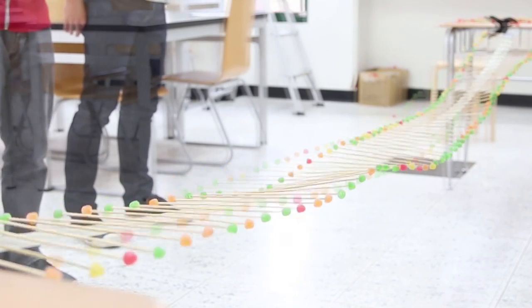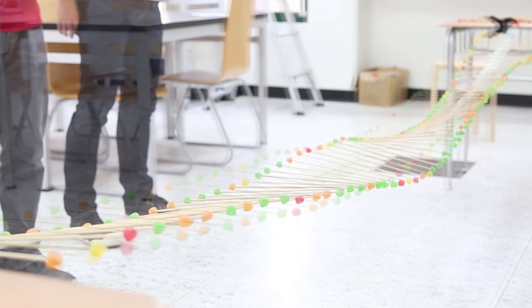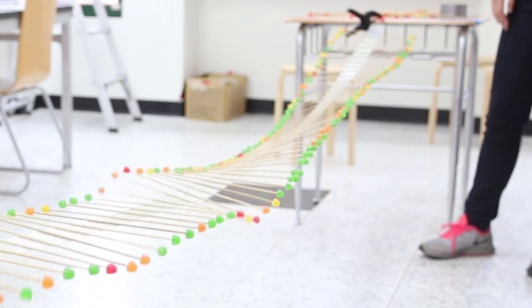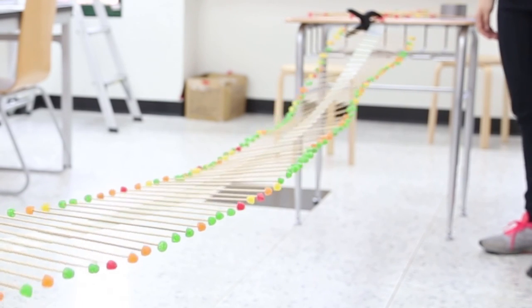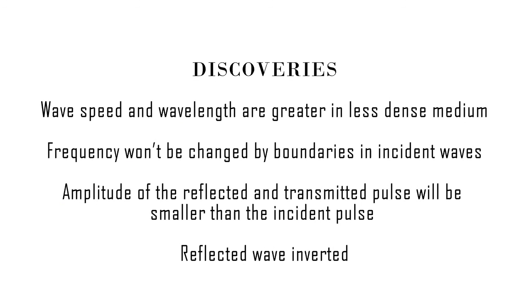The transmitted wave continues down the wave machine, will not be inverted, and will have speed, amplitude, and wavelengths greater than that of the incident wave. This is because the incident wave travels from the denser medium — the one with more candies — to the less dense medium. When a wave strikes the boundary, the energy is carried over to the less dense medium. The amplitude will increase because it is lighter on the second half while the energy stays the same. The frequency will stay the same because of the handshake principle, which states that one side of the wave machine will have the same frequency as the other side.